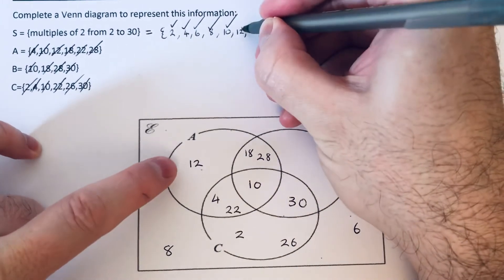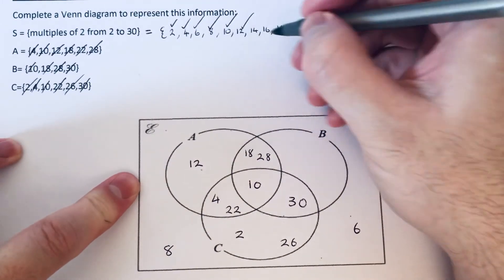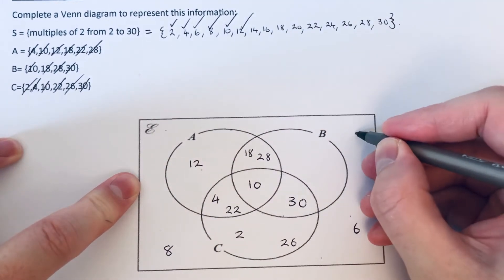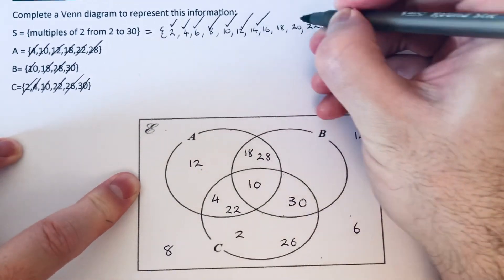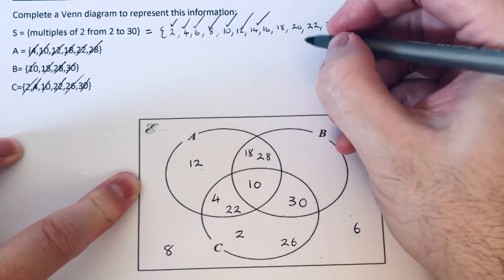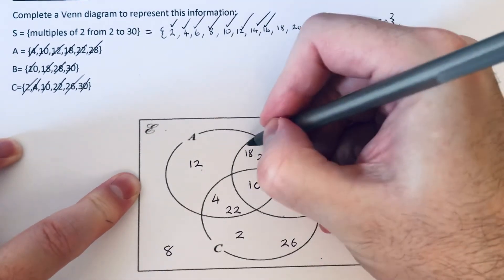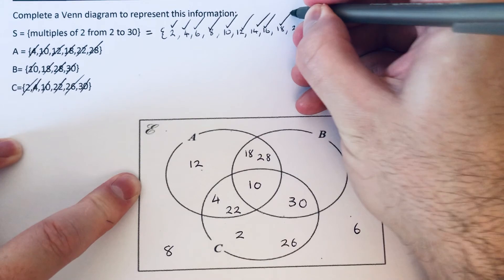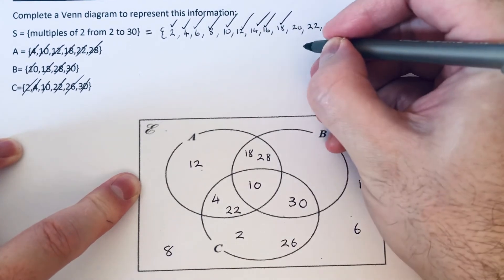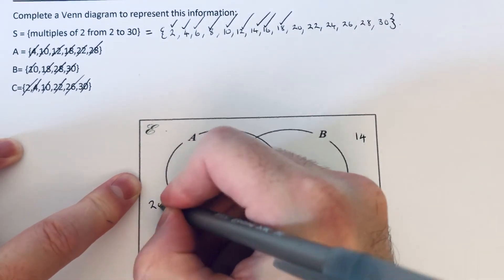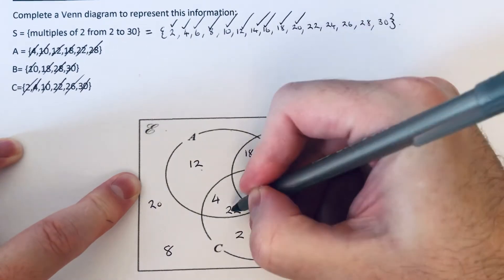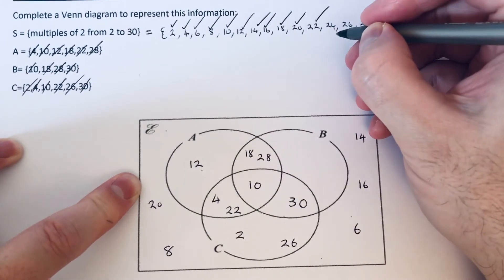Put a 12 in. 14 hasn't gone in any of the three sets. 16, don't think that one's gone in. 18 is there. 20 is not there.